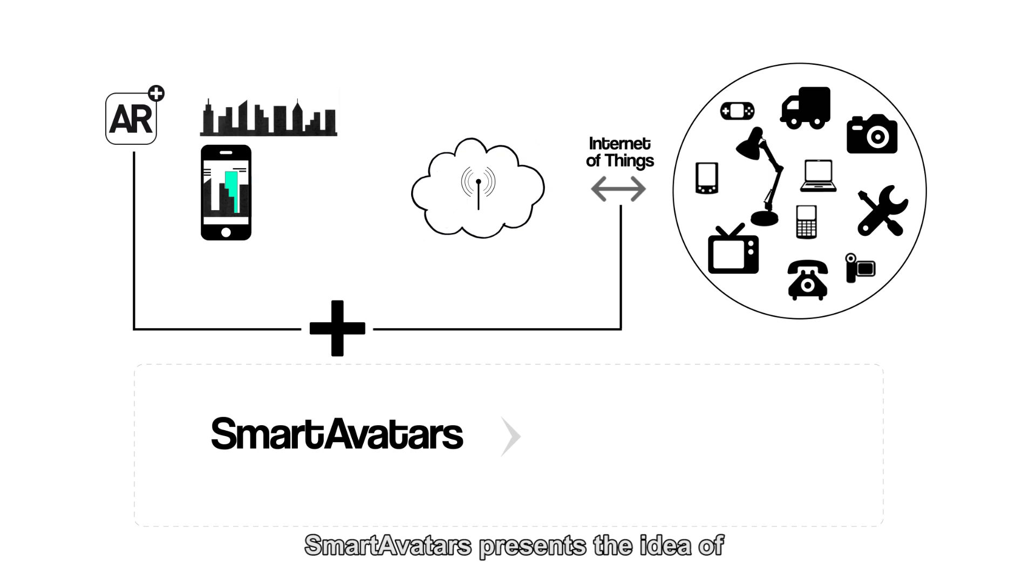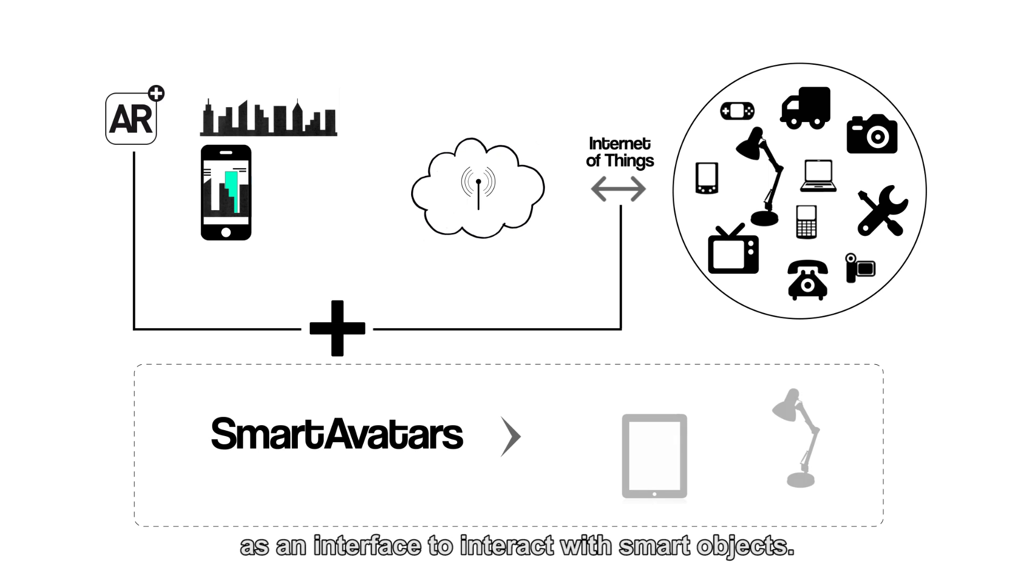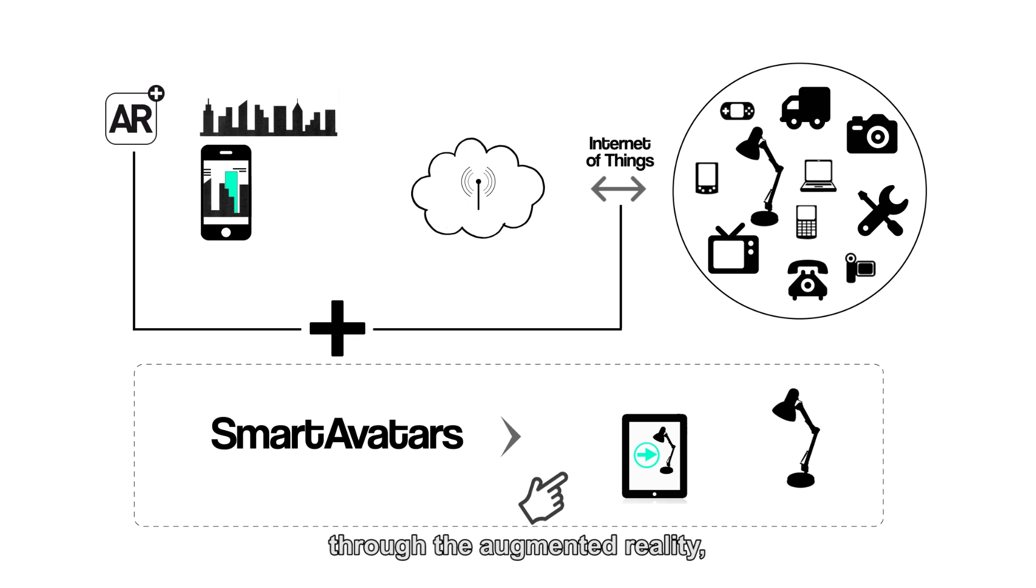Smart avatars presents the idea of using augmented reality as an interface to interact with smart objects. Using a mobile device for augmented reality, we can show the functionality of the smart object or generate new interactions. The concept focuses on the idea of defining new interfaces of an object.